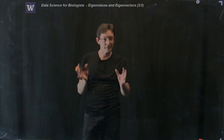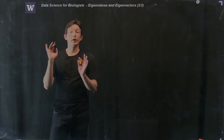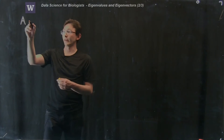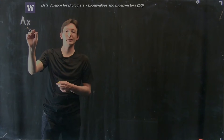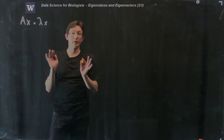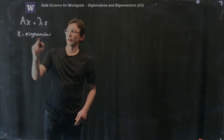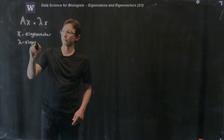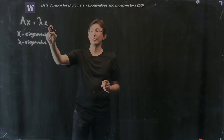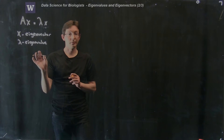Last time we saw that there are special numbers and special vectors called eigenvalues and eigenvectors for a given matrix A. If we have a matrix A, there are special eigenvectors x such that when I multiply A times x, I get the same vector direction x but multiplied by a number lambda. So x is an eigenvector and lambda is an eigenvalue. If I take a generic vector x and multiply it by A, I'm not going to get a vector in the same direction.